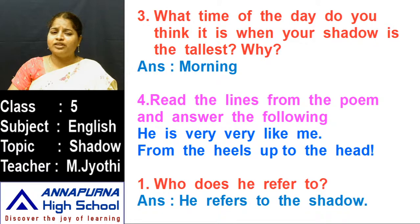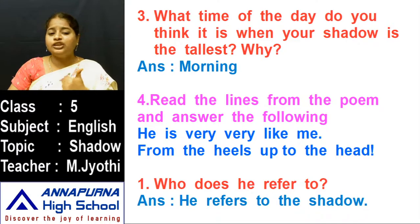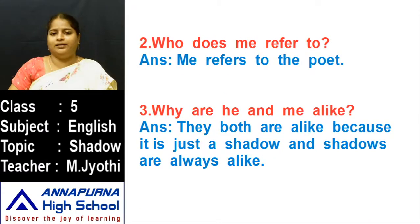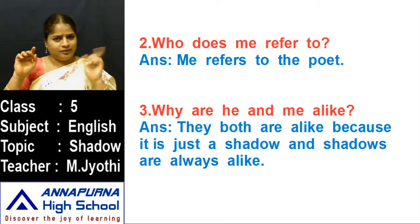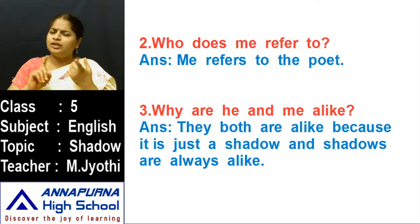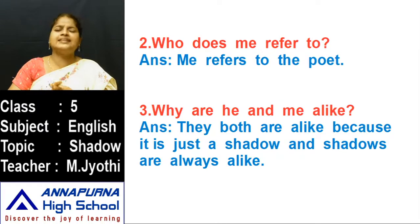What time of the day do you think it is when your shadow is the tallest? It is morning time. He refers to the shadow, me refers to the poet. They both are alike because it is a shadow of the poet only, and shadows are always the same. So children, we completed the poem explanation, meanings, and question and answers. Please write in your running notes, read them, write it three times, and learn them.